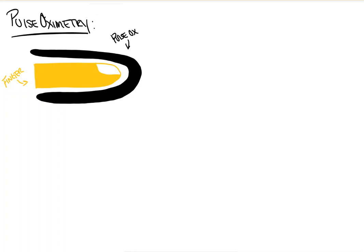So first and foremost, how does this piece of equipment work? As you can see here, I have a crude drawing of a finger and a pulse ox on top and underneath of it.